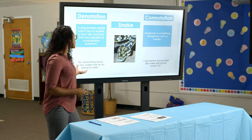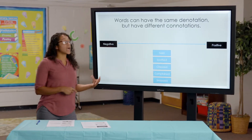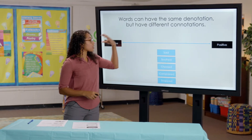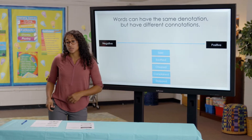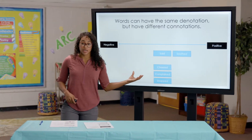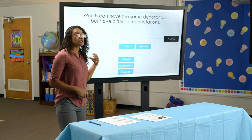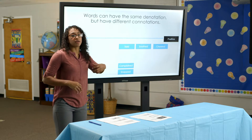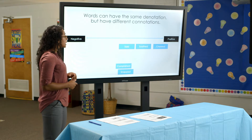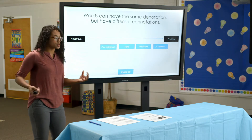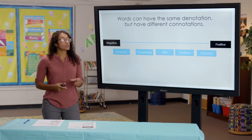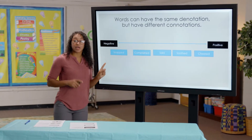The denotative and connotative meanings are different. But words can have the same denotation but different connotations. We're going to look at the word 'said' and all these other versions of it — they all have the same denotation. The word 'soothed' has a positive connotation, and 'cheered' has an even more positive connotation — you think of excitement. On the other side, 'complained' carries annoyance, and 'snapped' is even more negative. So these words all have the same denotation but different connotations.